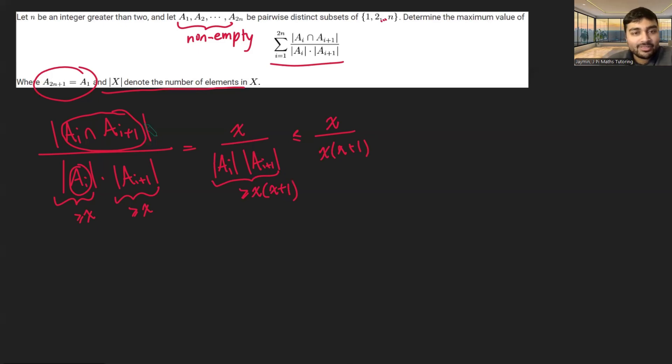Now, if x is 0, well, that just means that the intersection of these sets here is 0, or has size 0, in which case this whole fraction here is 0.